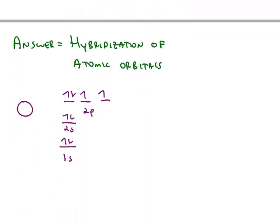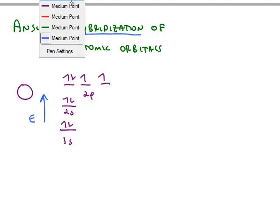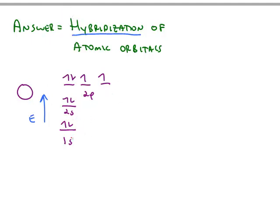So, the explanation is another bonding theory, which is the hybridization of atomic orbitals. If we plot the energy of the orbitals, here is all of the electrons for the oxygen atom. The important ones for bonding are the valence electrons. We're worried about the 2s and the 2p.